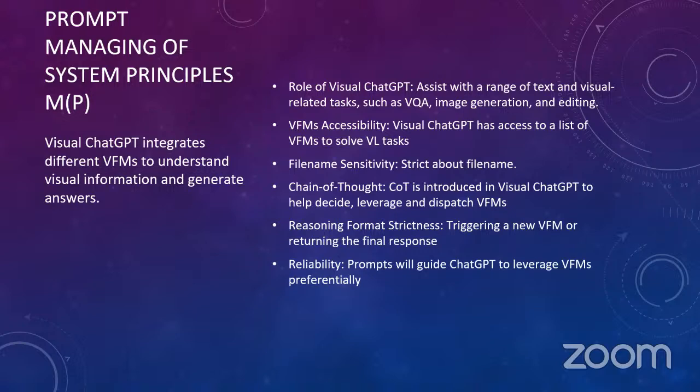The reasoning format triggers a new VFM if needed or outputs the final response. The reliability prompt guides ChatGPT to leverage VFMs preferentially — for example, first use a VFM to make the drawing in the case of the red flower, then make it red, and after that, use another Visual Foundation Model to make it a cartoon.